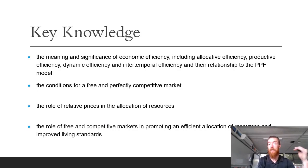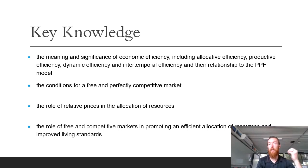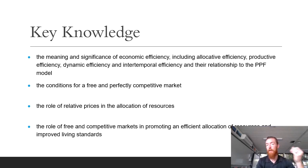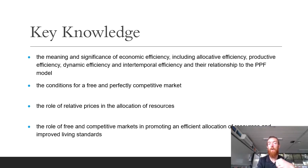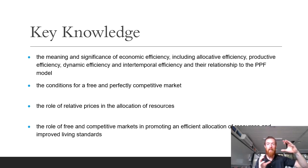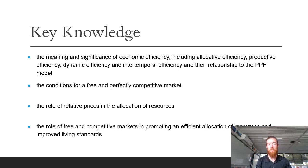We'll be looking at how allocative efficiency, technical efficiency, dynamic efficiency, and intertemporal efficiency all relate to the production possibility diagram. That comes up in the key knowledge today, which covers four dot points: the meaning and significance of economic efficiency including allocative, productive, dynamic, and intertemporal efficiency and their relationship to the PPF model, the conditions for a free and perfectly competitive market, the role of relative prices in the allocation of resources, and the role of free and competitive markets in promoting an efficient allocation of resources and improved living standards.